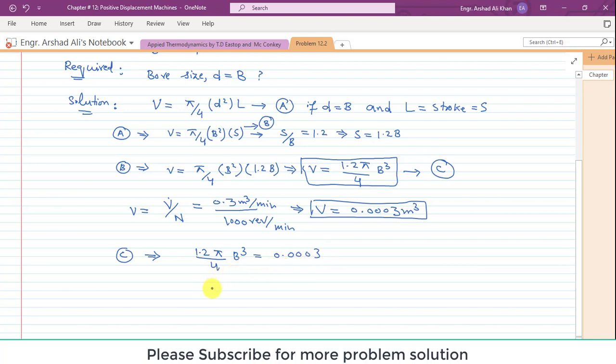By cross multiplication, it will become B cube is equal to 0.0003 into 4 divided by 1.2 pi. By simplifying this and taking the cubic root of the value, we get B is equal to 0.0683 meter.